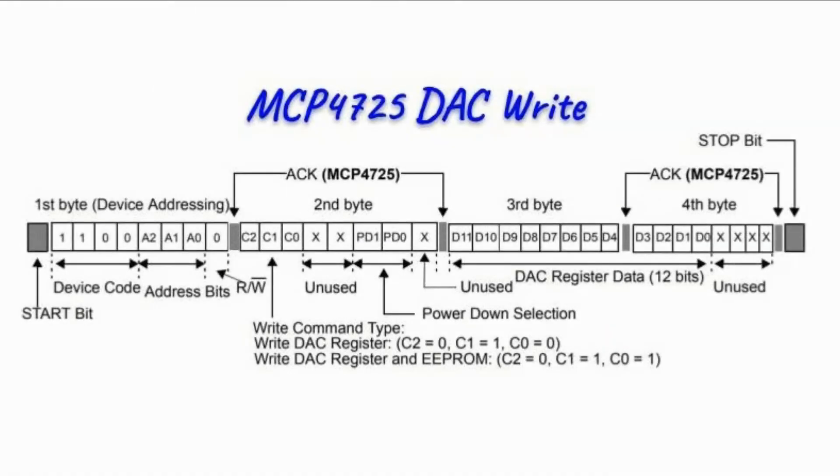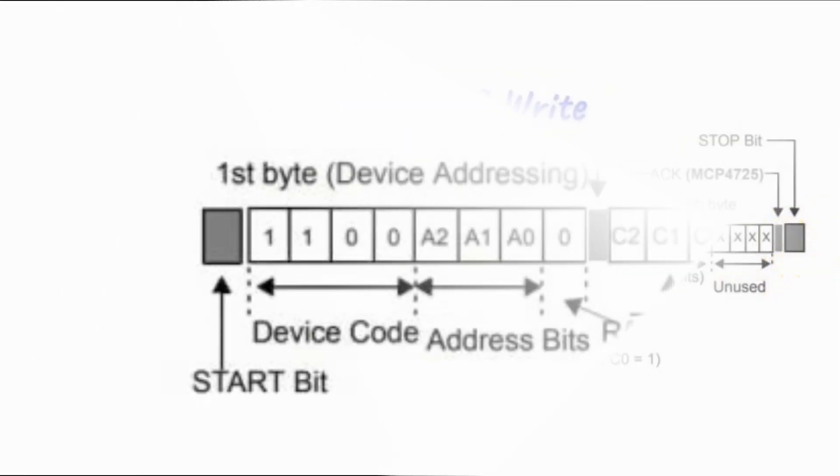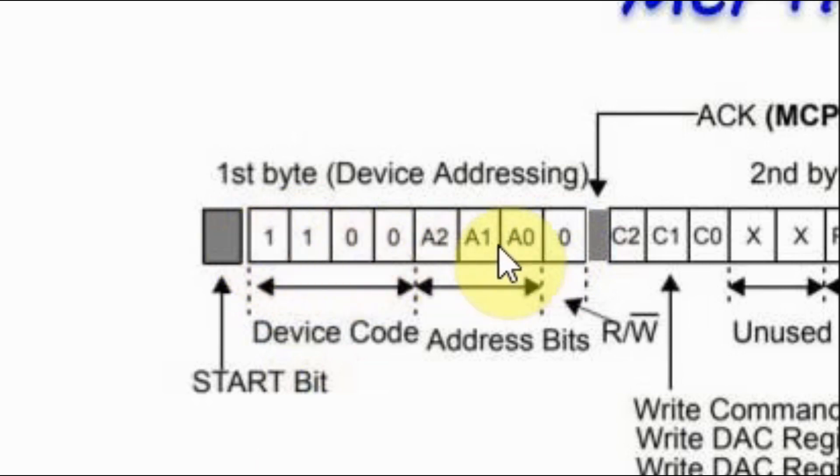To write to the DAC device, we use I2C protocol. The transmission begins with a start bit, then we have some bytes, and we end it with a stop bit. The first byte we send after the start bit is the device addressing. These four bits are the device code, and they are fixed at this value. Bits A0, A1, and A2 on the module are grounded. And the least significant bit is the write bit. So the device addressing here is C0 hexadecimal.